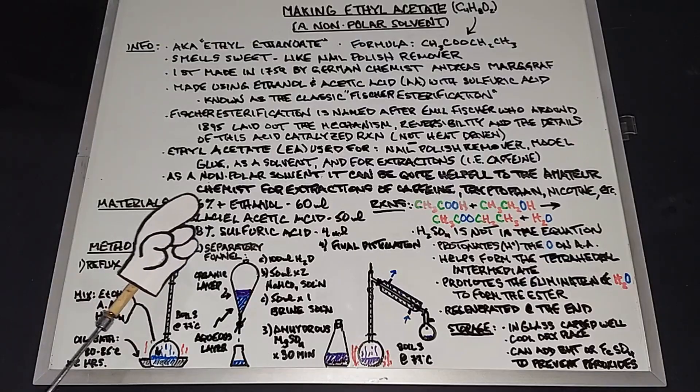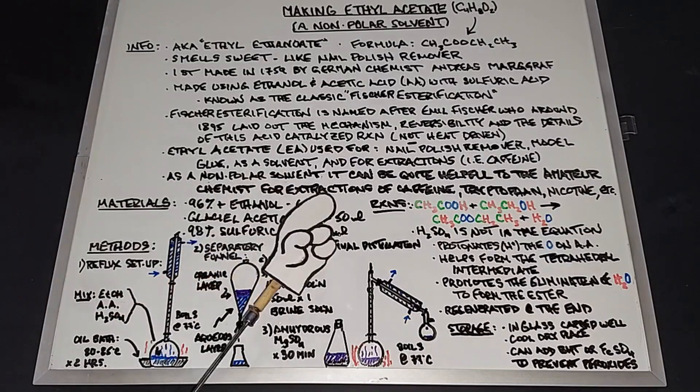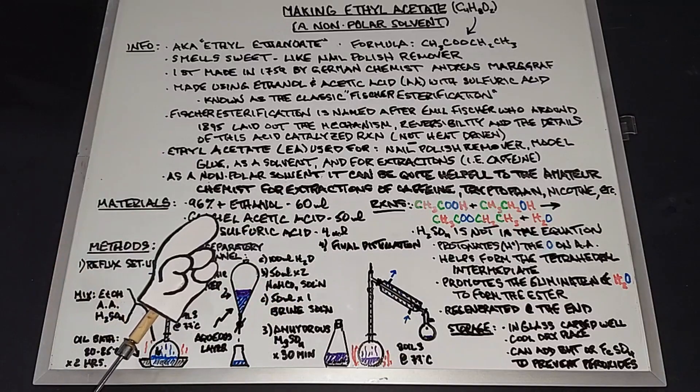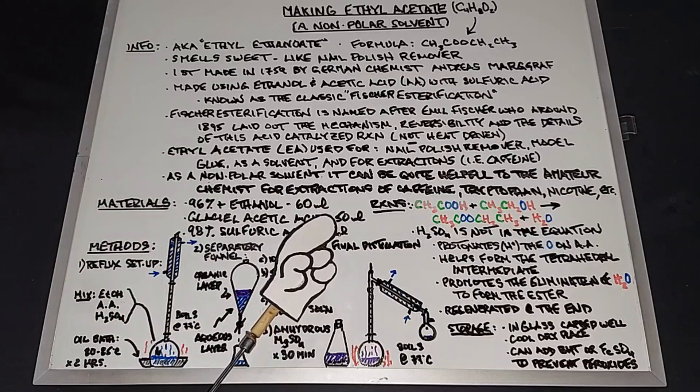In our materials, we need 96% or plus ethanol, 60 milliliters; glacial acetic acid, 50 milliliters; and 98% sulfuric acid, 4 milliliters.